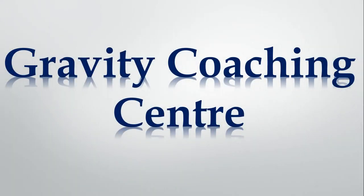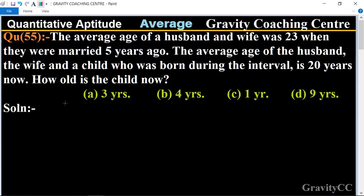Welcome to our channel Gravity Coaching Centre. Quantitative Aptitude, chapter Average, question number 55. The average age of a husband and wife was 23 when they were married five years ago. The average age of the husband, the wife, and a child who was born during the interval is 20 years now. How old is the child now?